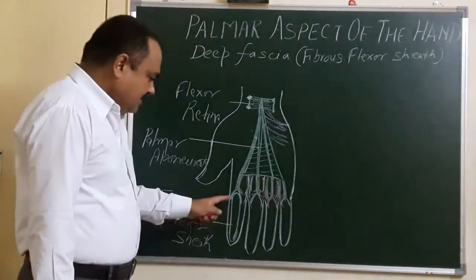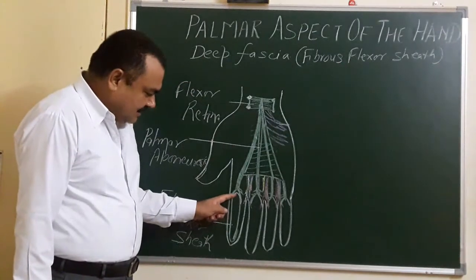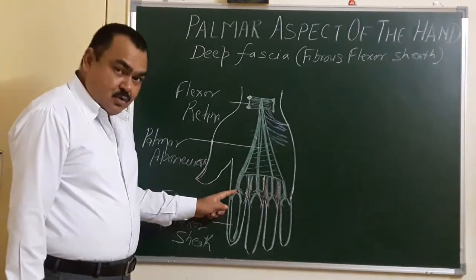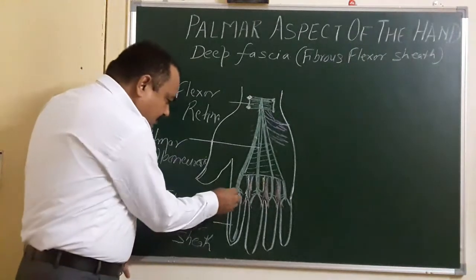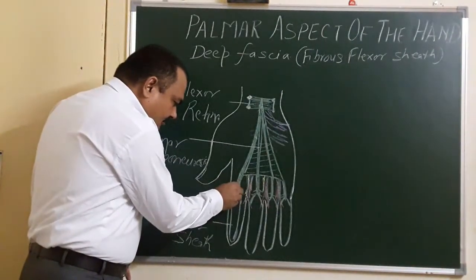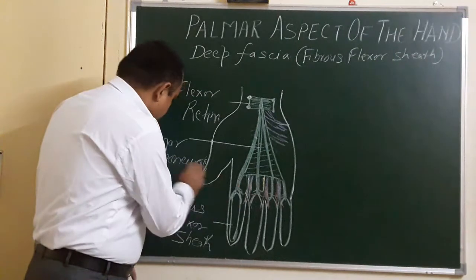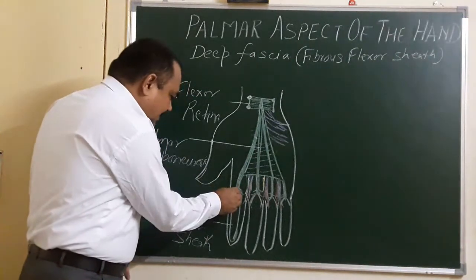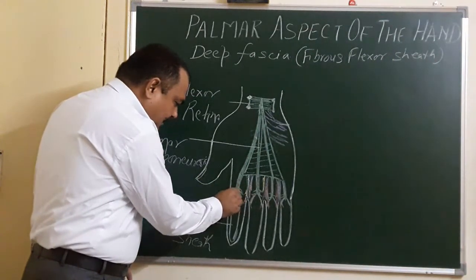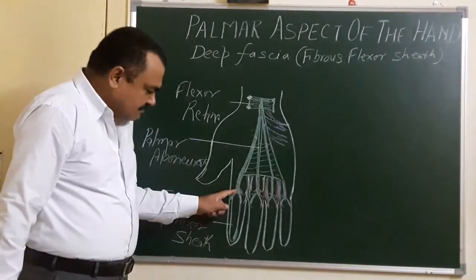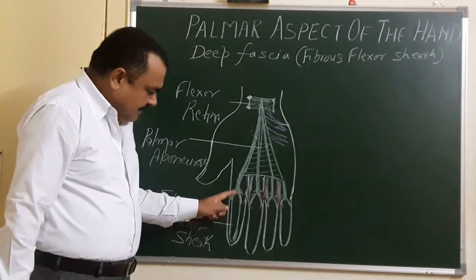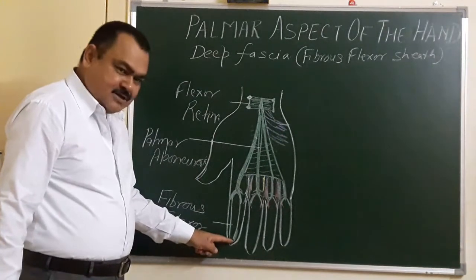This is the fibrous flexor sheath. It has a proximal end which is open, and it is merged with slips of the palmar aponeurosis.